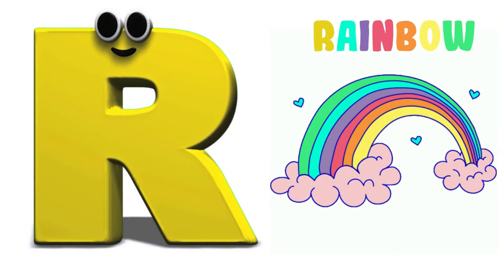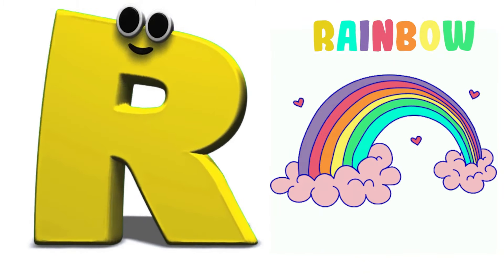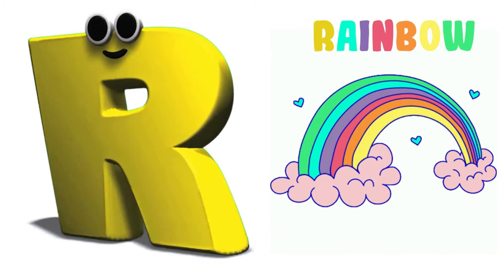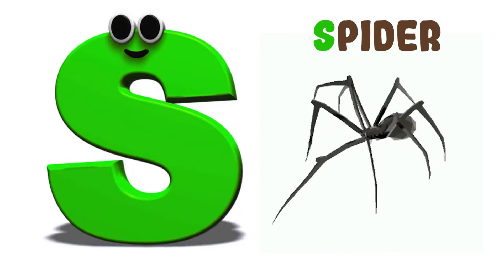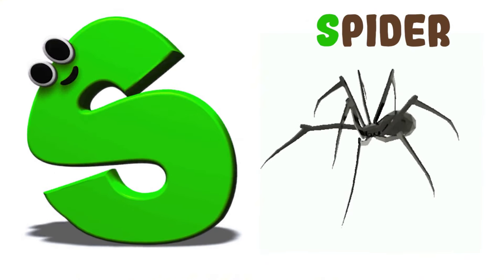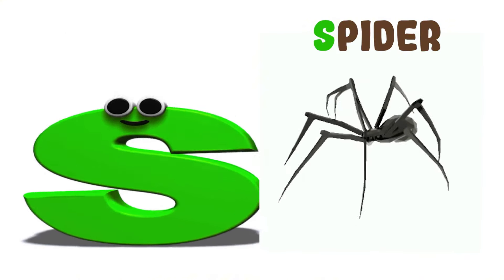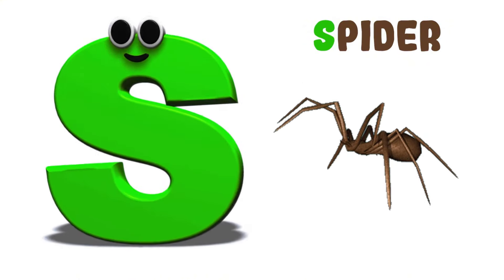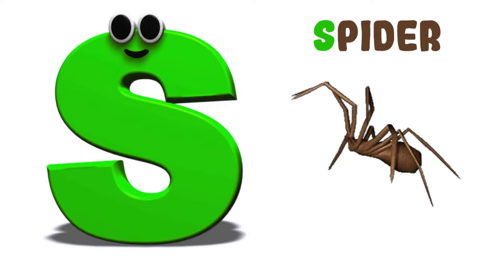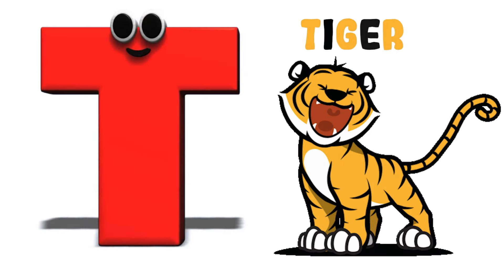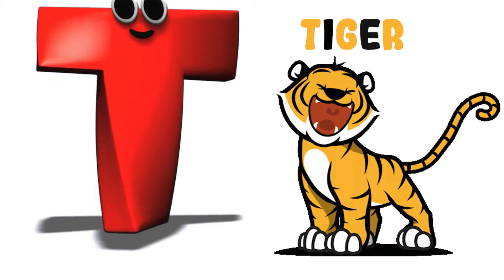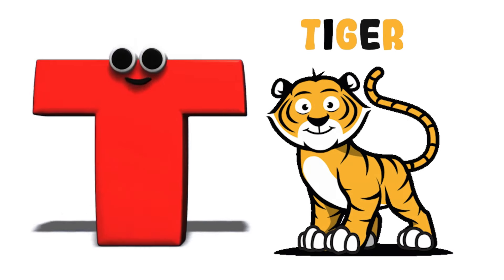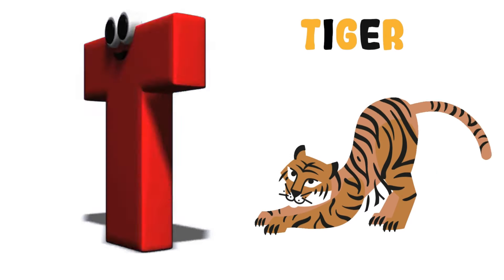R is for rainbow. r-r-rainbow, r-r-rainbow, r-r-rainbow. S is for spider. s-s-s-spider, s-s-spider. s-spider. T is for tiger. t-t-tiger, t-t-tiger. c-tiger.